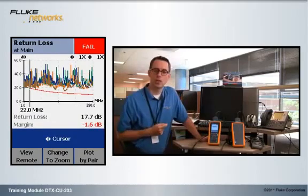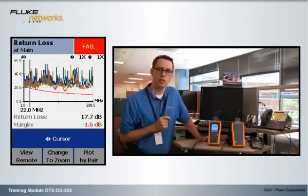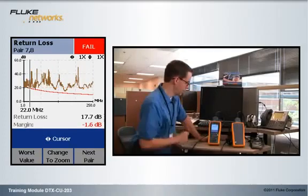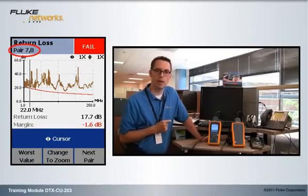So we're seeing all four pairs of return loss and again we're only interested in the one that failed so press the F3 key and that automatically goes to pair 7-8 which is our worst performing pair.